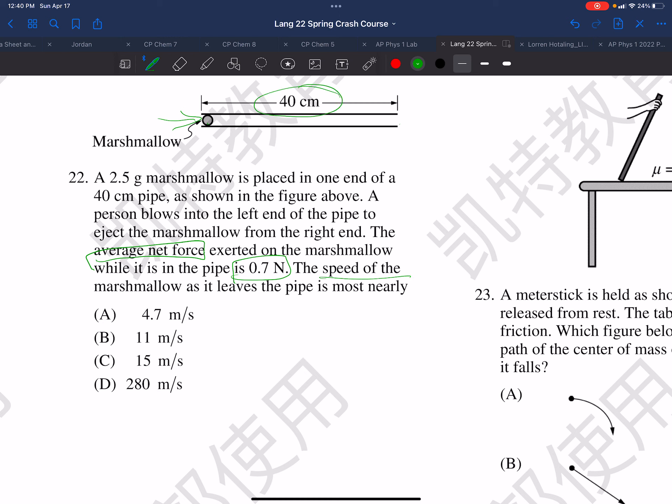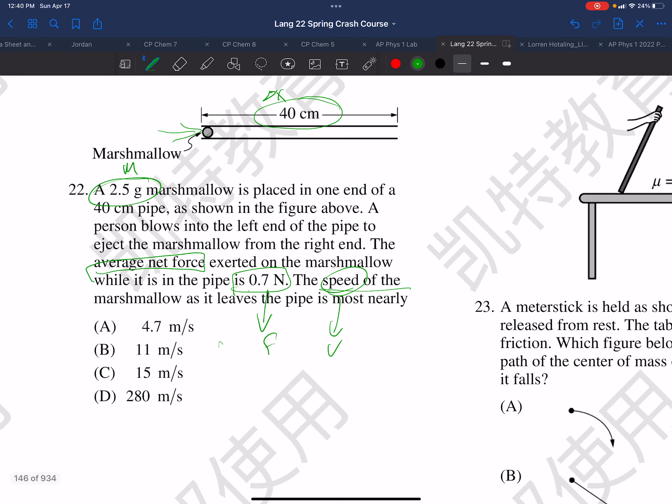We have a distance, we have a force, and we're looking for a velocity. We have a mass. So we got mass, a delta x, we have a force, and we're looking for a v.